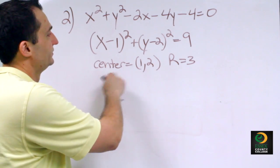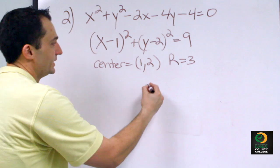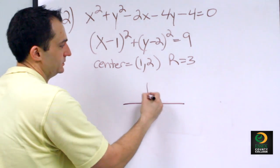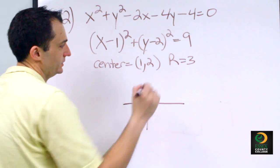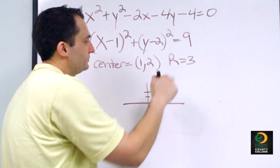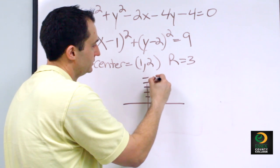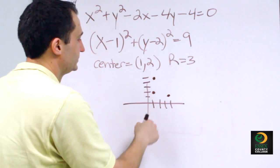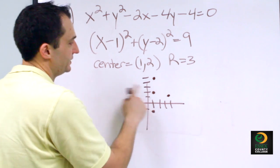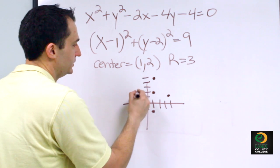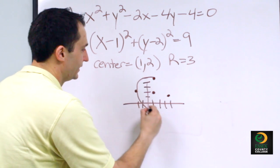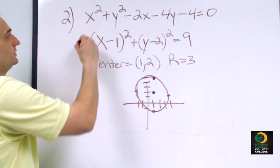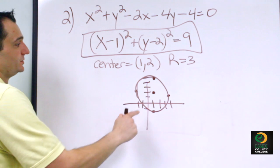Now with our center at (1, 2) and radius 3, we can sketch the graph. Our center is at (1, 2). From this point we go up 3, to the right 3, down 3, and to the left 3. Then we connect the outer dots and we have our circle. So our equation is in standard form and this would be our graph.